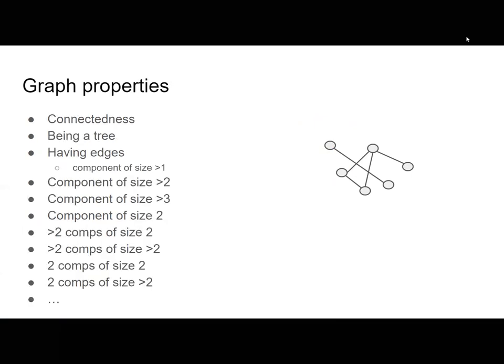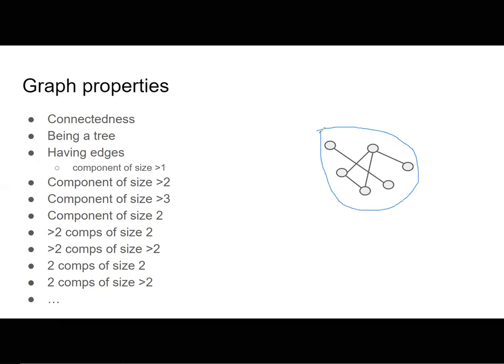Graphs have certain properties. You may have connected graphs or disconnected graphs. For instance, this graph — is it connected or disconnected? It's disconnected, because it has an isolated edge and you can't go from that edge to the rest of the graph. So this graph is disconnected.